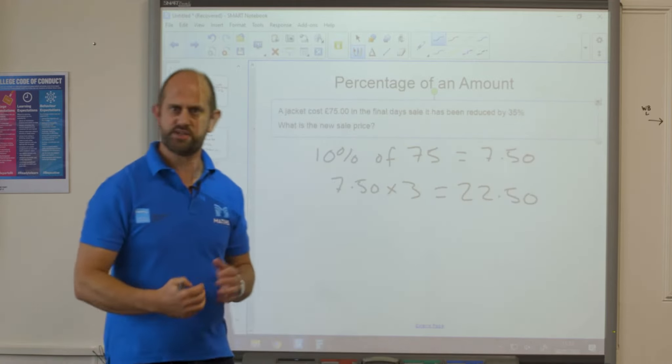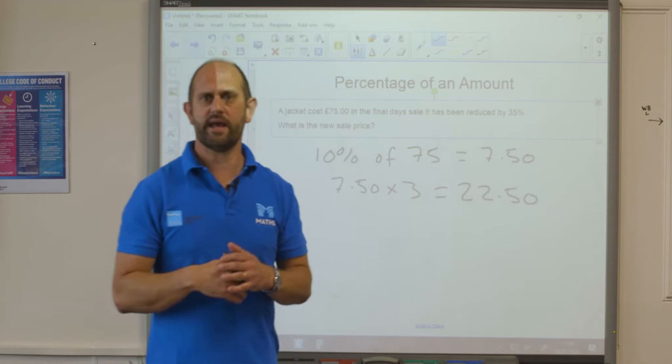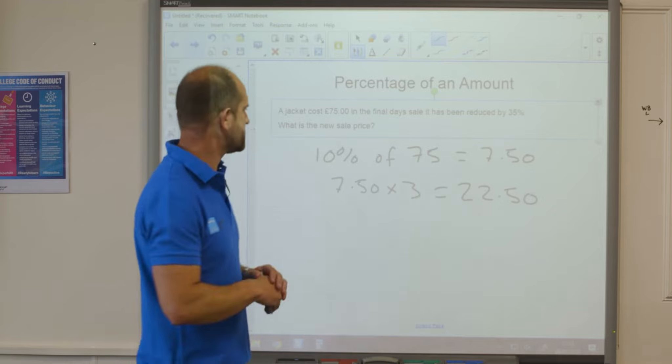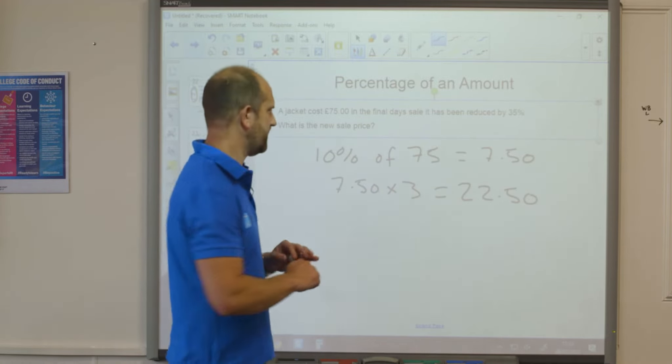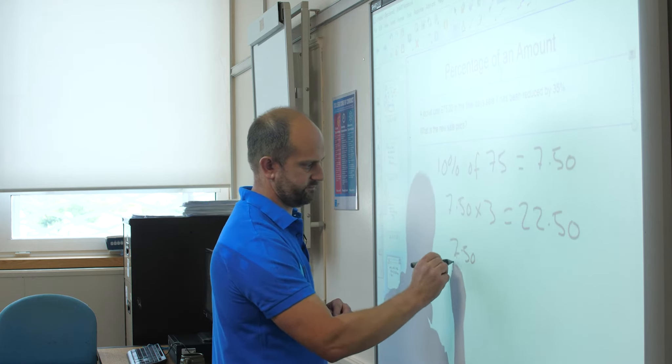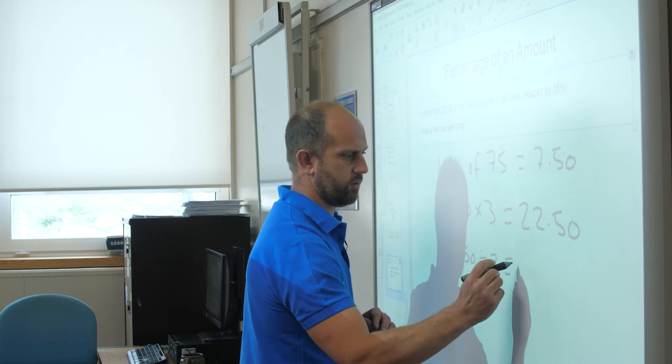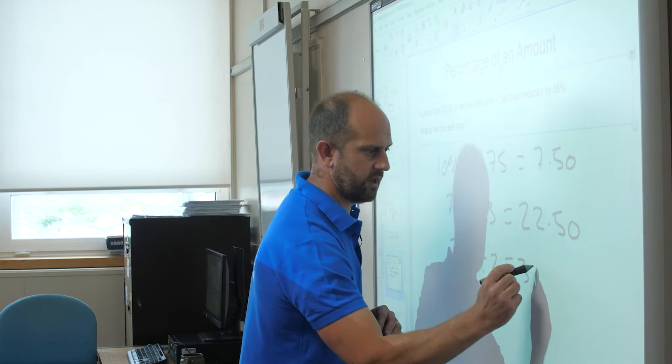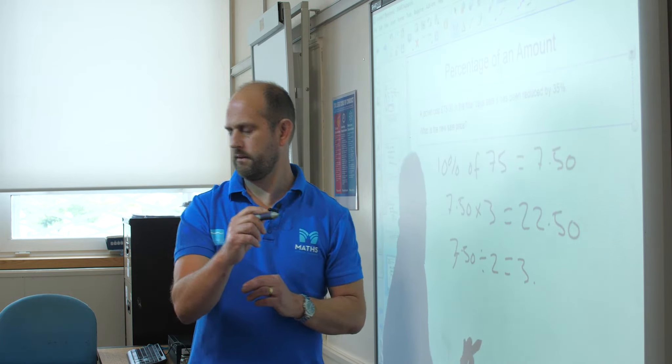So I found 30% of 75 pounds. So now all I need is that extra 5%. And I'm going to do that by halving the 7 pounds 50. So 7 pounds 50 divided by 2 equals 3 pounds 75.